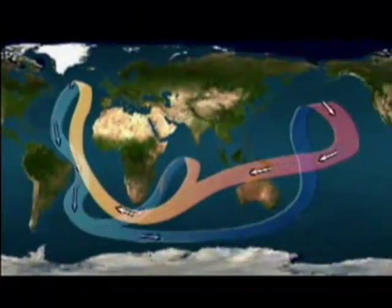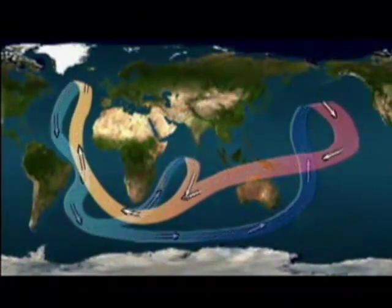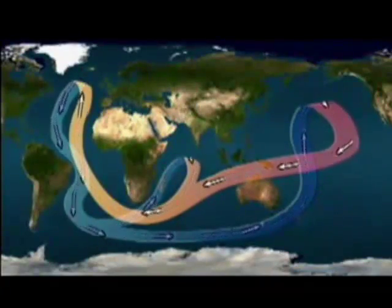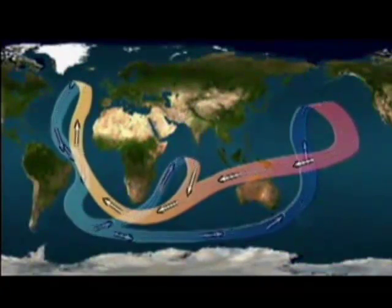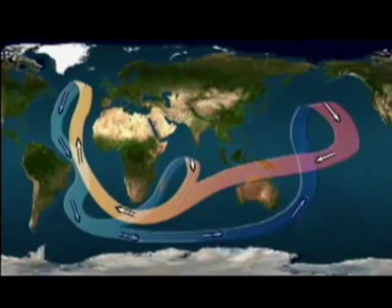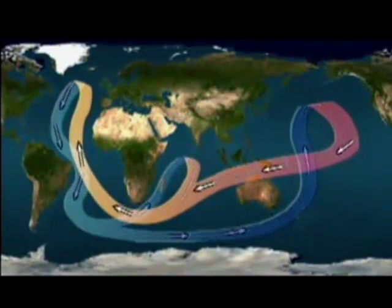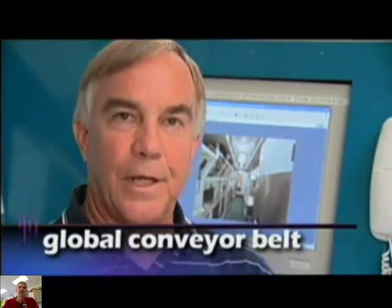Where do these currents end up? They both sink down several kilometers while spreading out horizontally and moving along the bottom of the Atlantic Ocean. They eventually mix while circulating around Antarctica, then move into the deep Indian Ocean and finally into the Pacific. So the water from the poles may one day end up on a beach in Hawaii? What goes down must come up. It takes the average water molecule a thousand years to make the complete cycle. We call this the global conveyor belt and it has a large impact on climate.